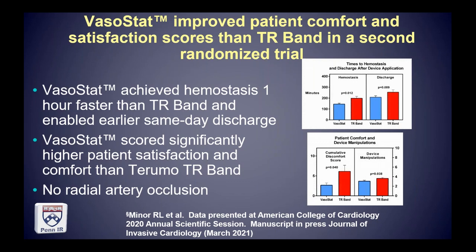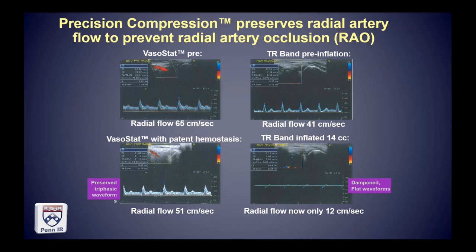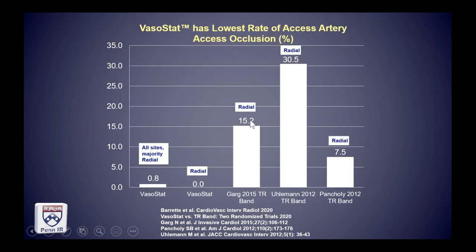We have this device that addresses a problem in a more intuitive, ergonomic, haptically efficient model than prior solutions. It came to market, studies were done, and then randomized trials were done. A prospective study done in Japan showed preservation of the duplex waveform with patent hemostasis compared to the competitive device, which had basically a flat line — meaning radial artery occlusion occurred. Radial artery occlusions were substantially higher in the other device compared to the VasoStat, which has the lowest rate of radial artery occlusion on the market.